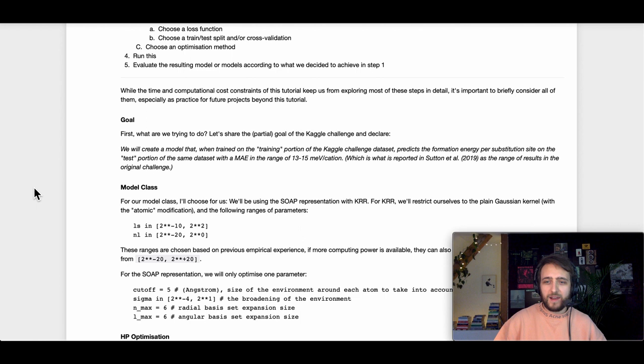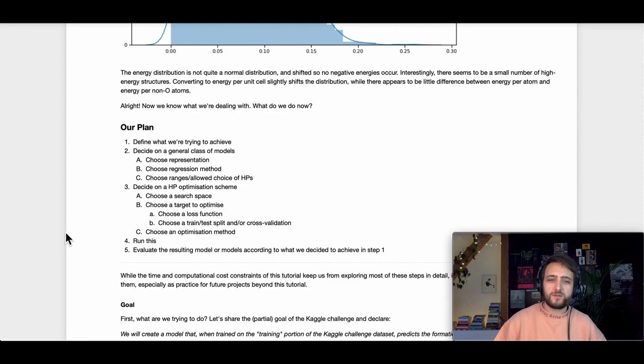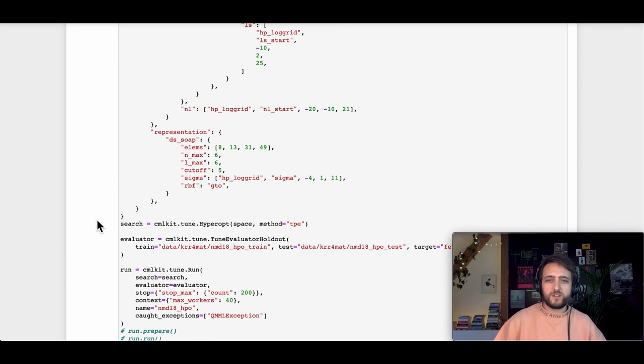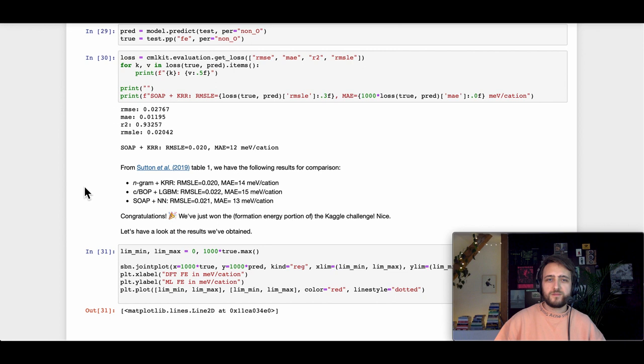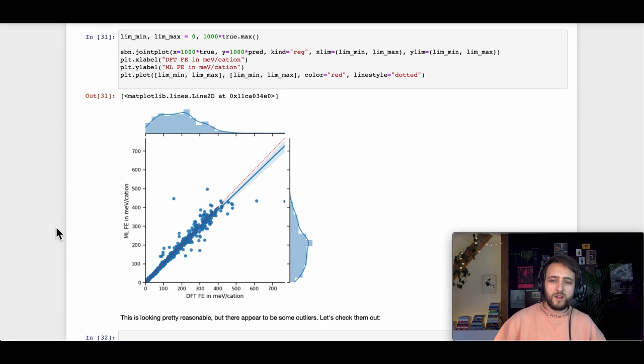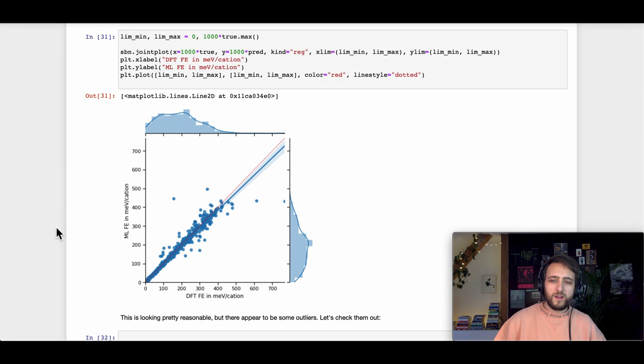Then we decide what we actually want to do, which is always important. You always need a plan. You need to agree with yourself in advance what you're actually trying to achieve. Then we talk about how to optimize the hyperparameters. We introduce CamelKit, which is a little toolkit to do these hyperparameter optimizations. Then we get a model. Then we look at the outputs of the model. Maybe I will not spoil how we actually do. You can find this out for yourself.